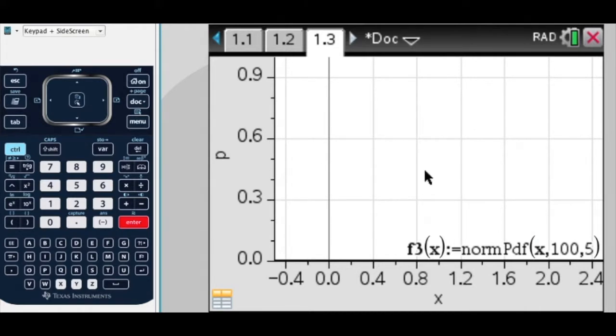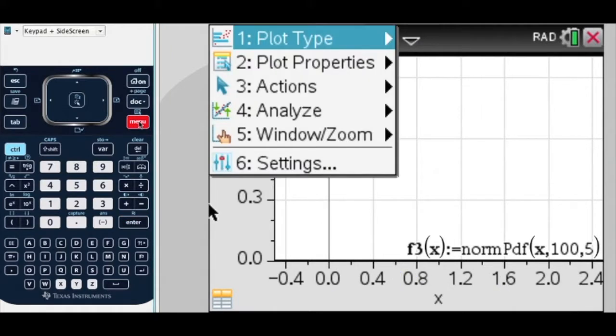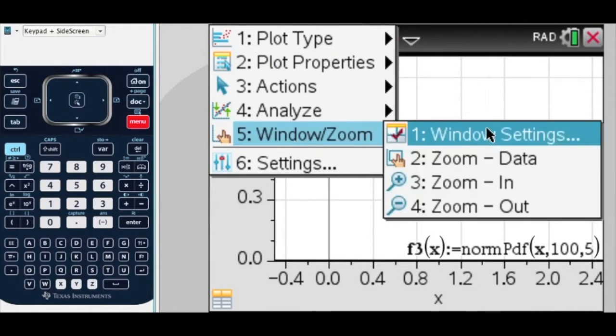Now, at the moment, we can't see it because our window settings aren't correct. So, first of all, for my x, if I want to draw this normal curve, I need 100 in the middle, and I need to go up and down by 5s. So, if I press menu, window, window settings,